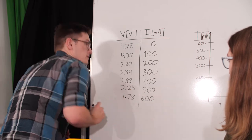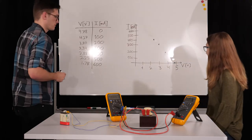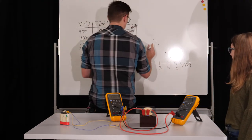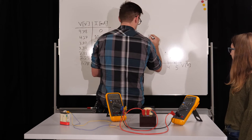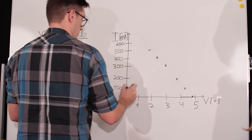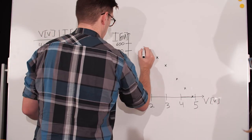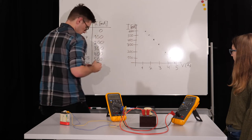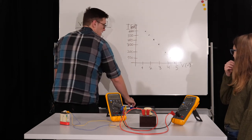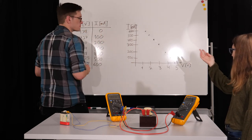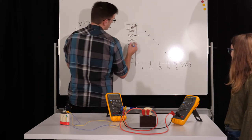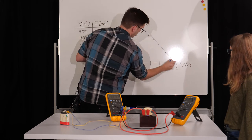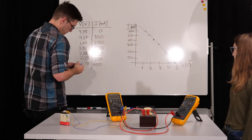Great, so now we can complete the chart, right? Yes. Perfect. And then if we draw a line to connect the points, it looks like a linear relationship. So I is a function of V.